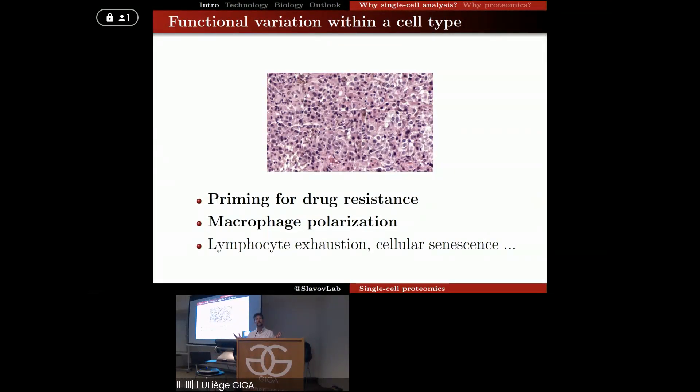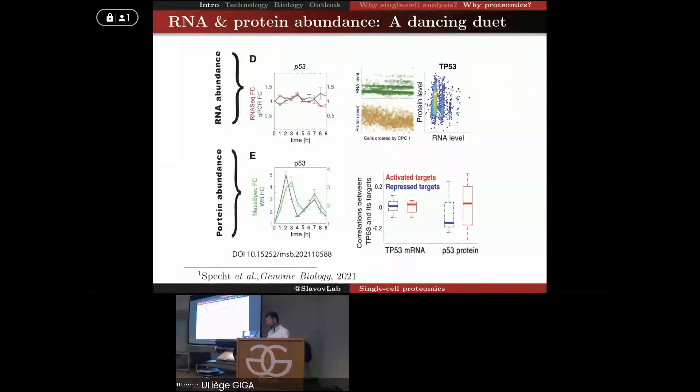Similarly, macrophages are innate immune cells that play diverse and important roles in our tissues, and they can have very different functions. They can have either pro-inflammatory or anti-inflammatory functions. And again, those differences are not so easily seen. They're within a cell type. Similarly with T cell exhaustion and cellular senescence - these are all areas that we study in my lab - we have variability of function and molecular composition within a cell type.